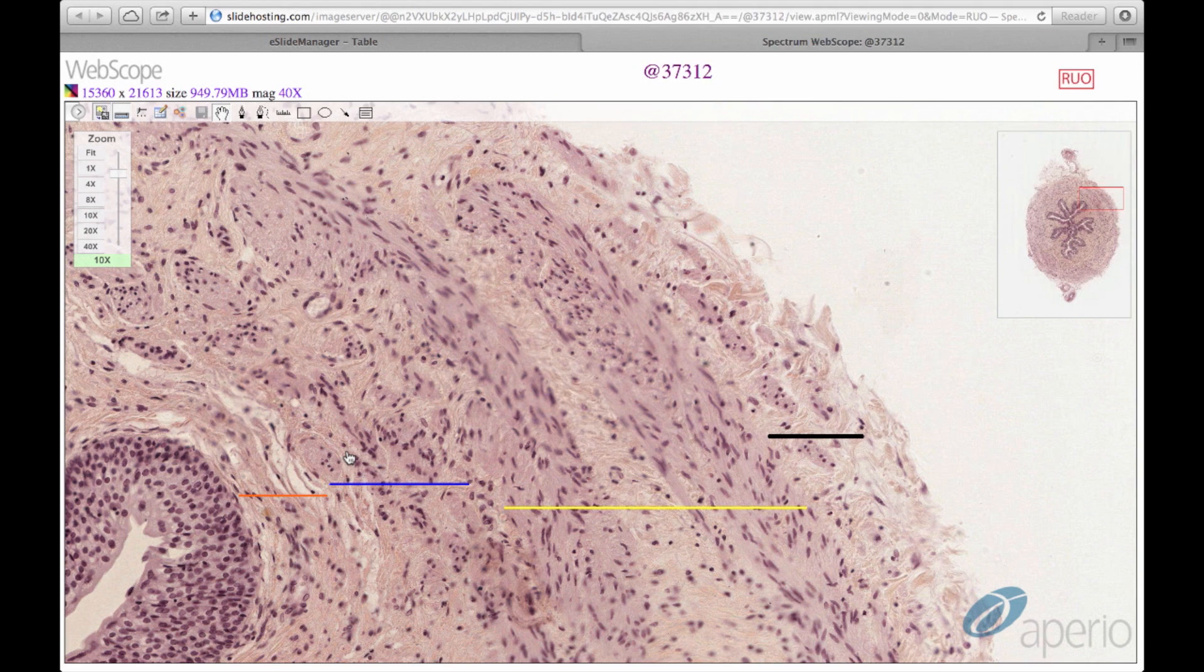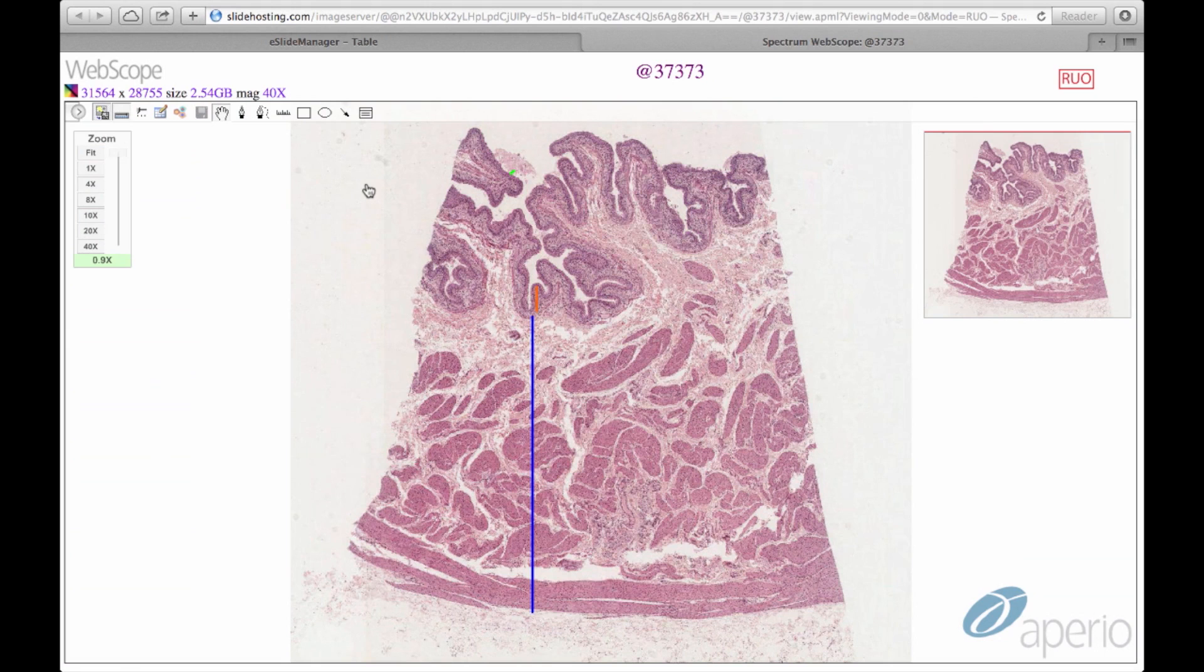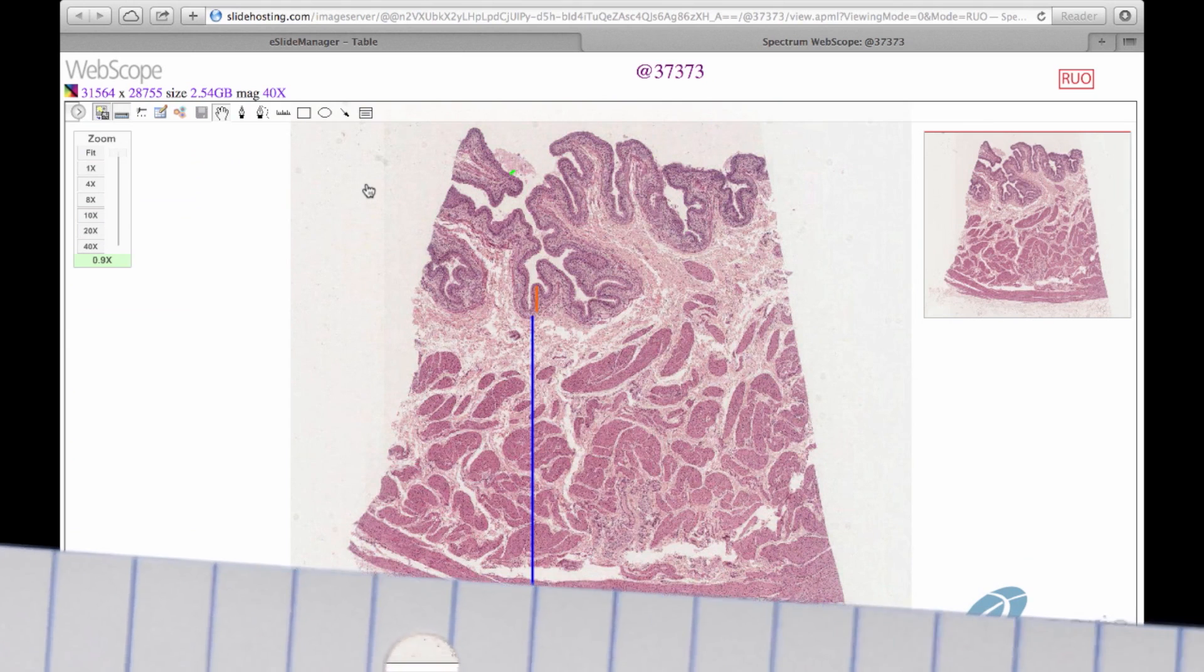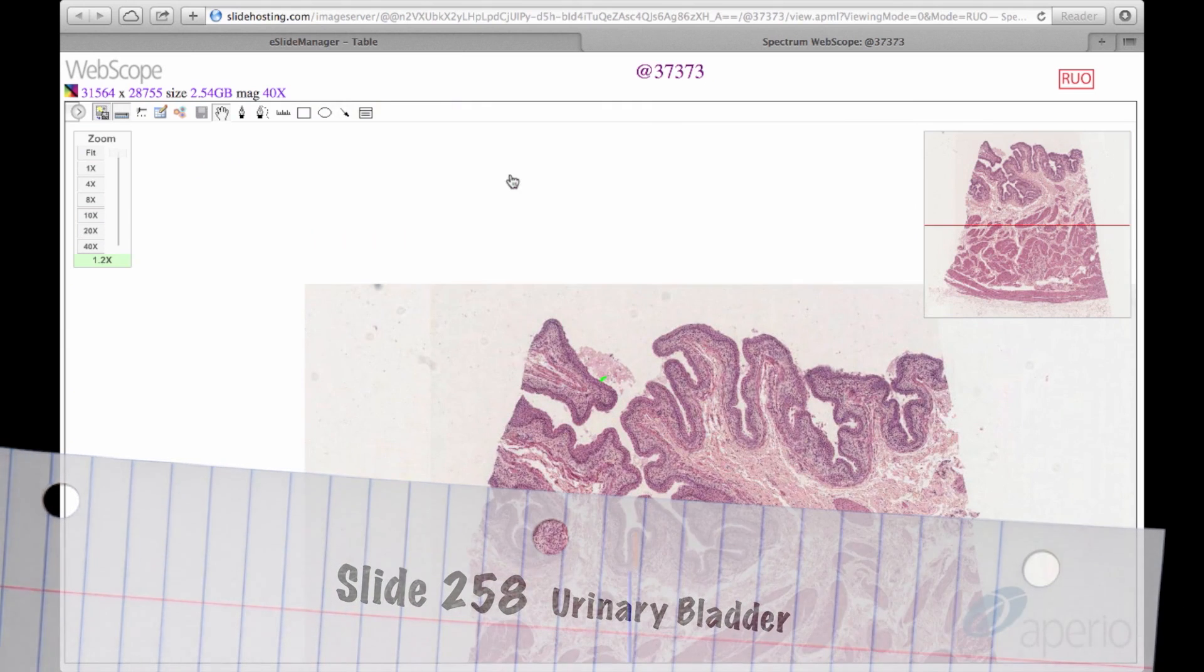For review, make sure you practice identifying serosa and adventitia on this slide. Our final slide of the day is slide 258, which is a section of the urinary bladder stained with H&E.